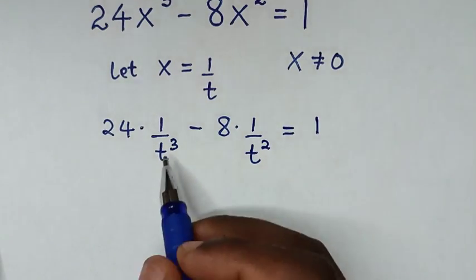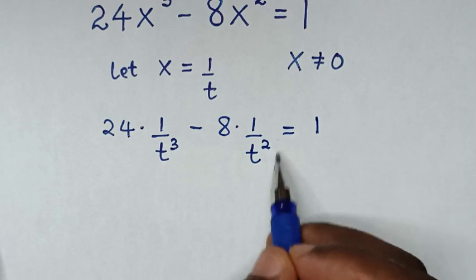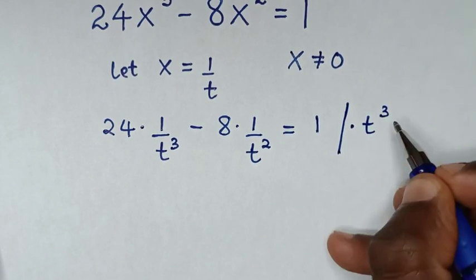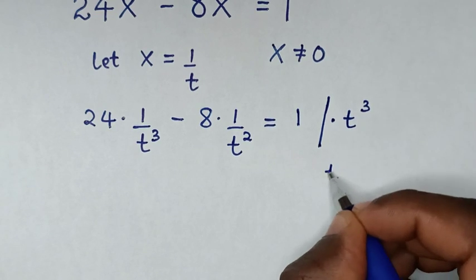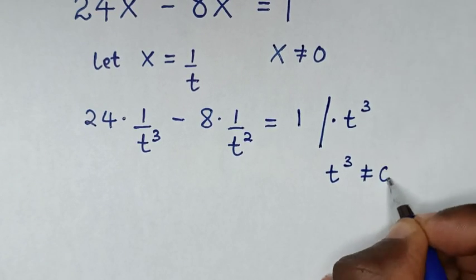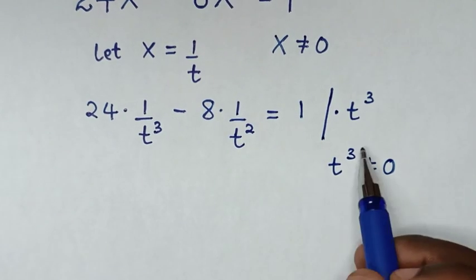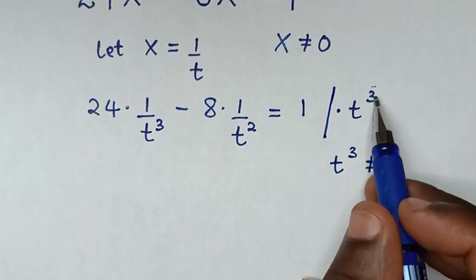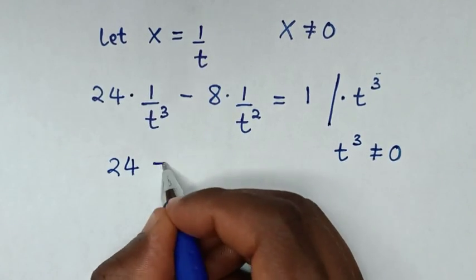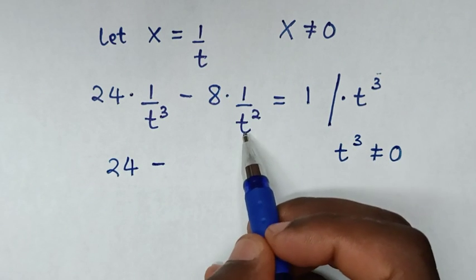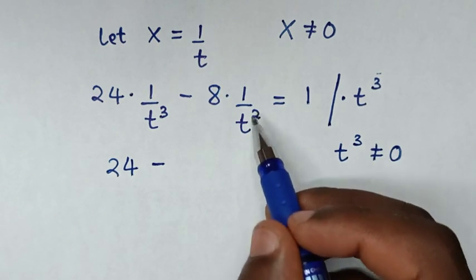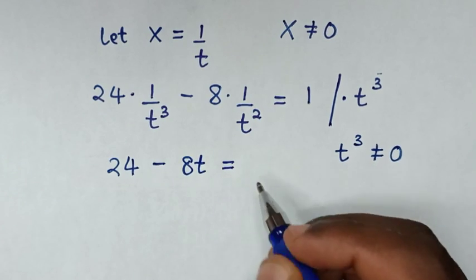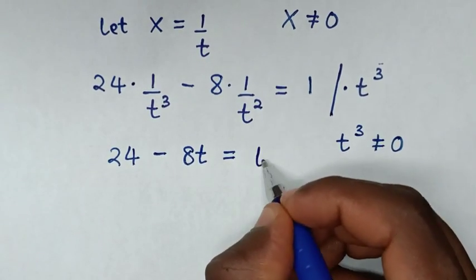In the next step, to remove the denominators, we multiply the whole equation by t³. We should note that t³ is not equal to 0. Then 24 times t³ over t³ gives 24. Minus 8 times 1 over t² times t³ — the t² and t³ will cancel — so it will be 8t, is equal to 1 times t³, which is t³.